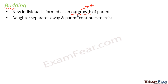The daughter separates away and the parent continues to exist — nothing happens to the parent. On the parent's body a small outgrowth is formed, which gradually grows to form a new individual and then separates out from the parent. This is very commonly seen in hydra and yeast. Yeast belongs to the fungi group of organisms.